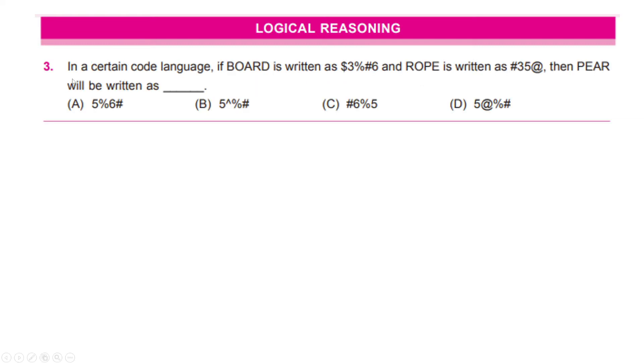Let's go to the next question which reads, in a certain code language, if board is written like this and rope is written like this, then pair will be written as which of these codes? Pause if you want to choose your answer.